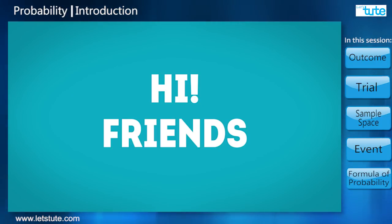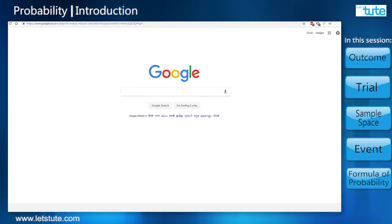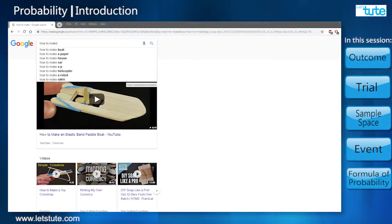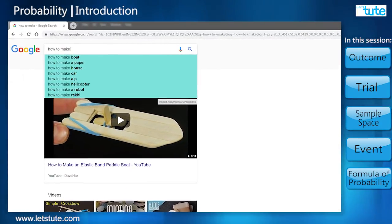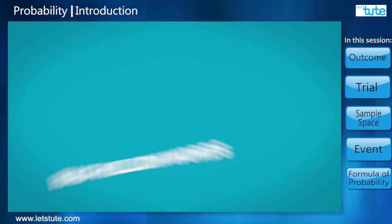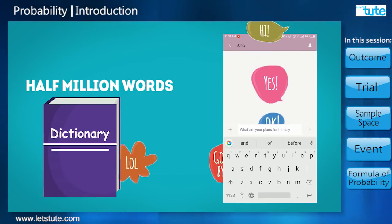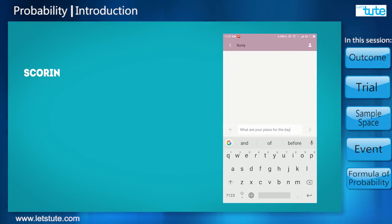Hi friends, this is a common sight nowadays. How do you think the application predicts the next possible words? The application has about half a million words in English dictionary stored as part of its database, then it scores the words.